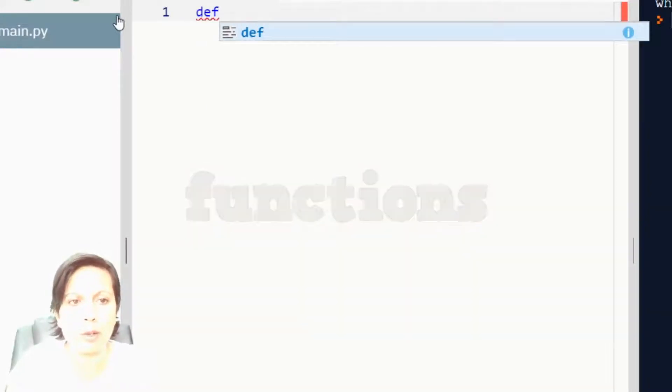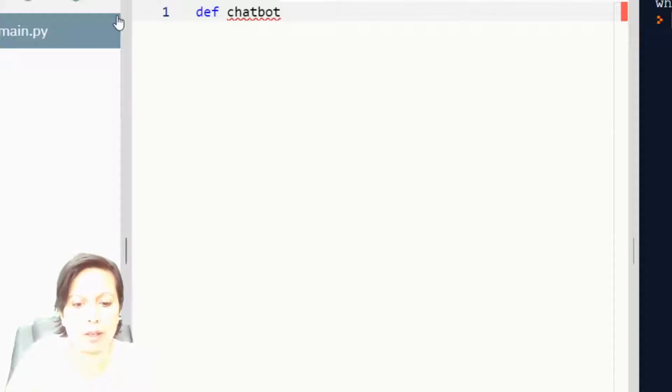And we do that by typing the word def define. And we can call the function anything we want, such as chatbot. I've called this chatbot. And you note that I have an open bracket, close bracket, and a colon.